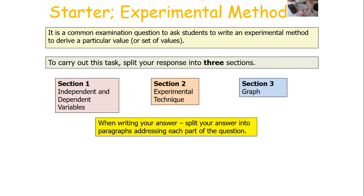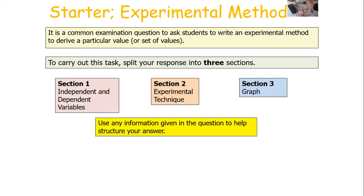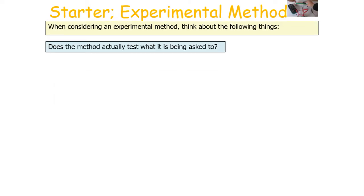Remember, when writing your response to an experimental method, there are three sections: section one, writing about your independent and dependent variables; section two, talking about your experimental technique; and finally, what graph you would draw and how you would use the graph to work out the value wanted. When writing your answer, split it into paragraphs addressing each part of the question. It's likely the experiment will not be one you've carried out in class — you've got to apply your understanding to different situations. Use any information given in the question to help structure your answer, and if given a diagram of the equipment, look at it carefully and make sure you fully understand what's going on.